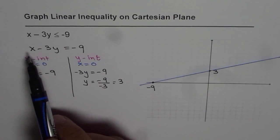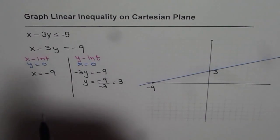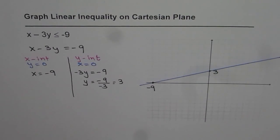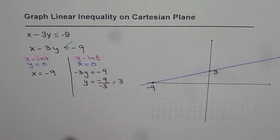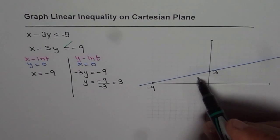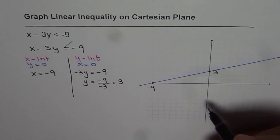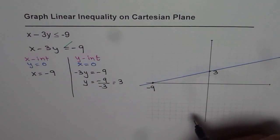This line represents x - 3y = -9, but the question is less than equal to -9. That means we need to shade something which is either above the line or below the line. How to figure out which is the right area?